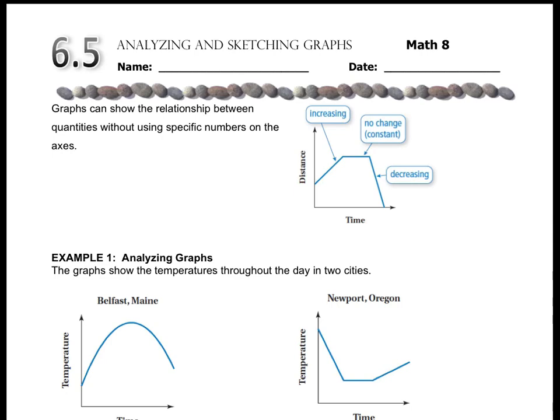The middle section of this graph shows a straight line horizontally. That means that even though time is passing, distance isn't going anywhere — distance has no change. And then a decreasing slope, in this case, would mean that while time is passing, distance is actually going down.